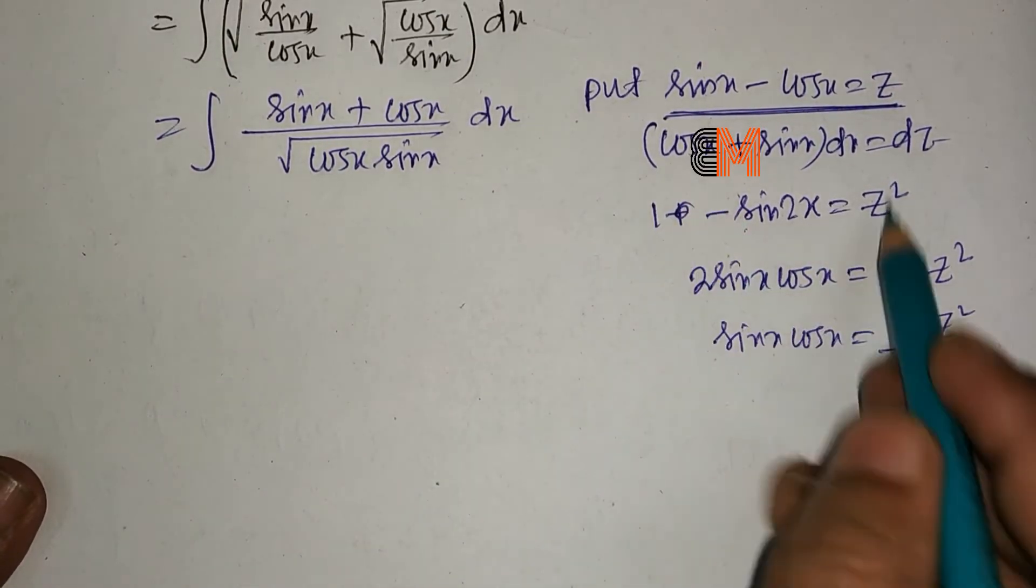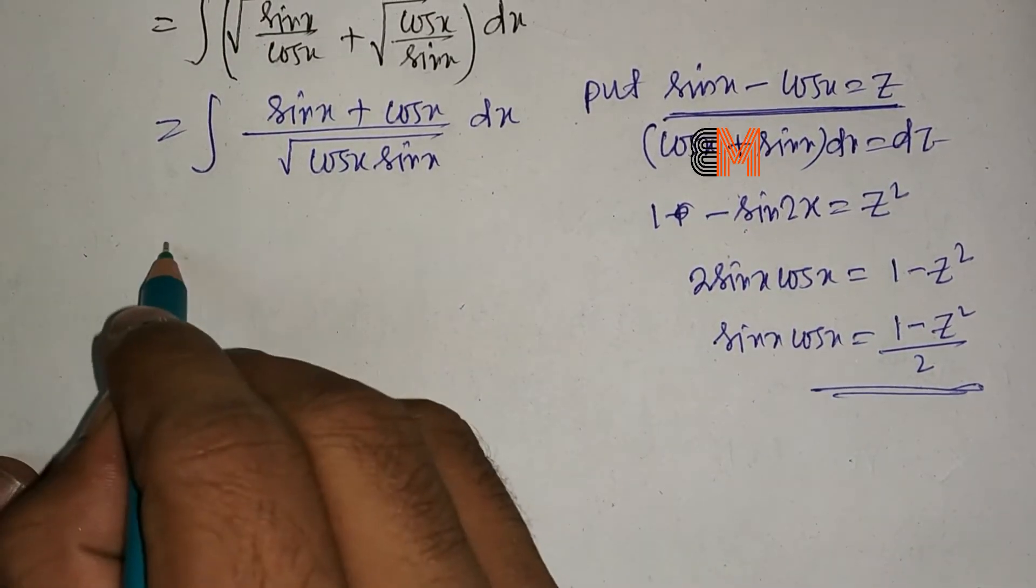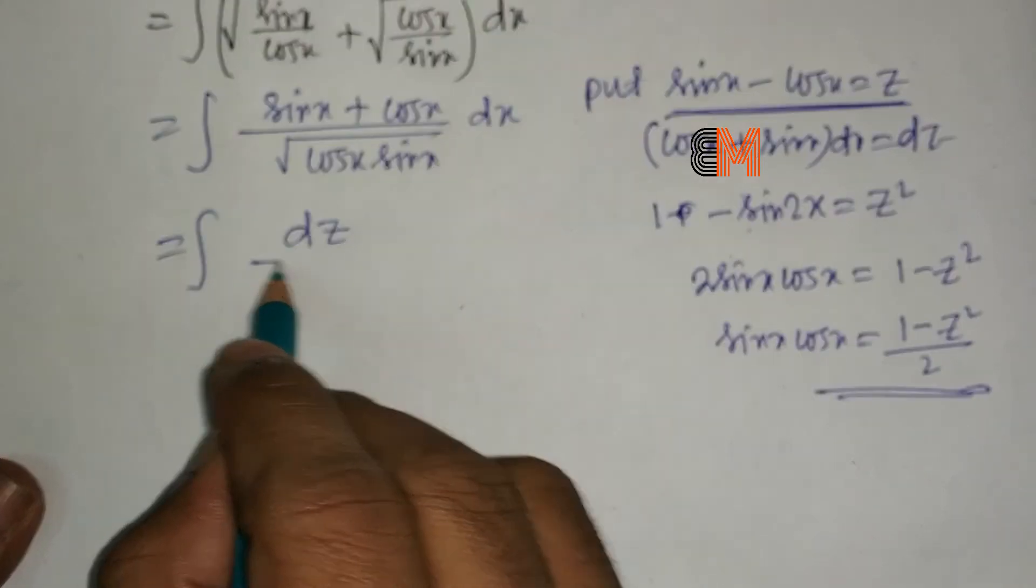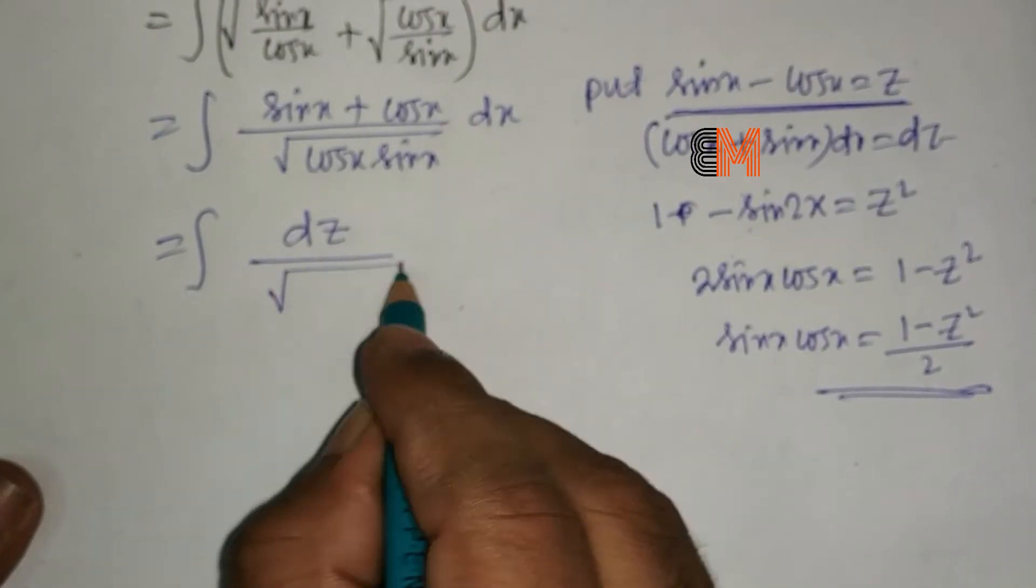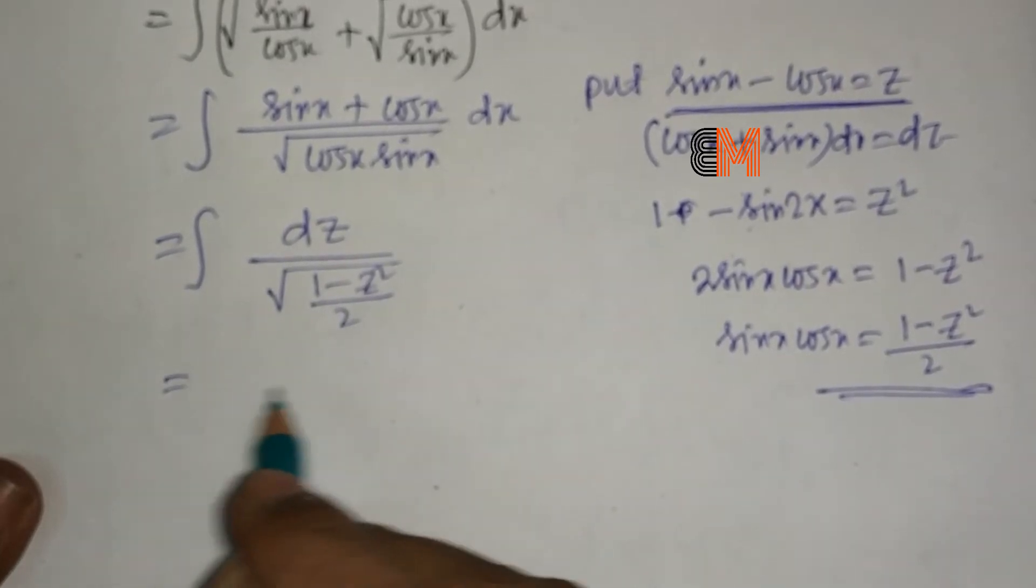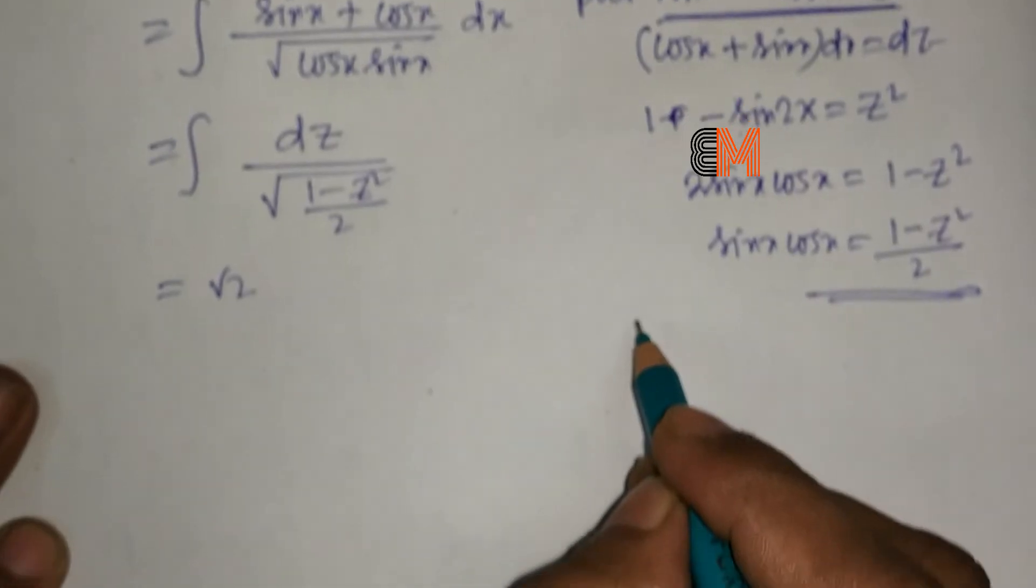Now put this term in here. We get the integral of dz/√((1 - z²)/2), which equals √2 times the integral of dz/√(1 - z²).